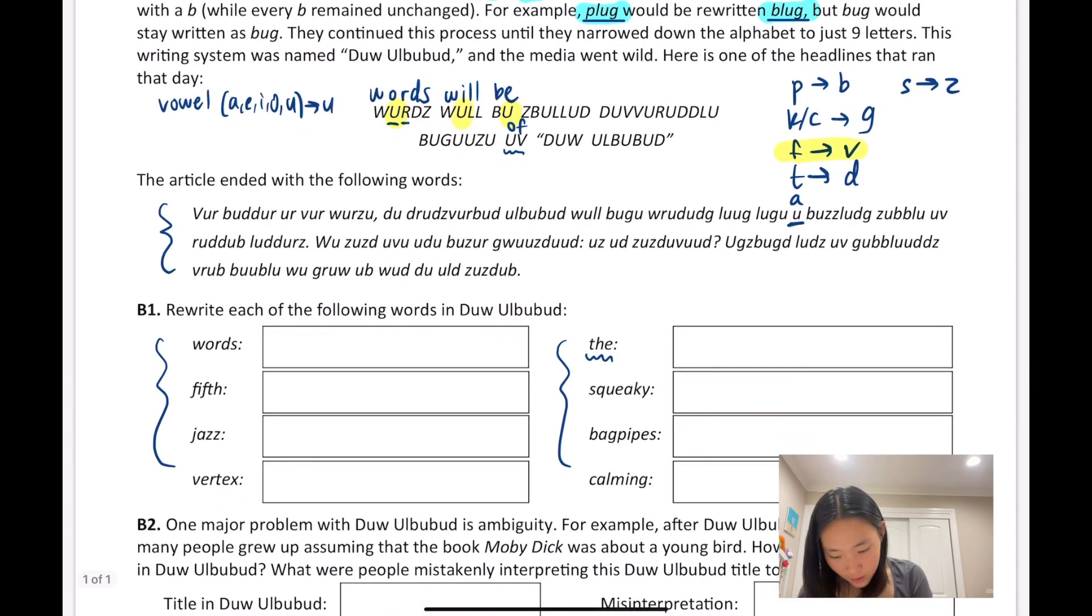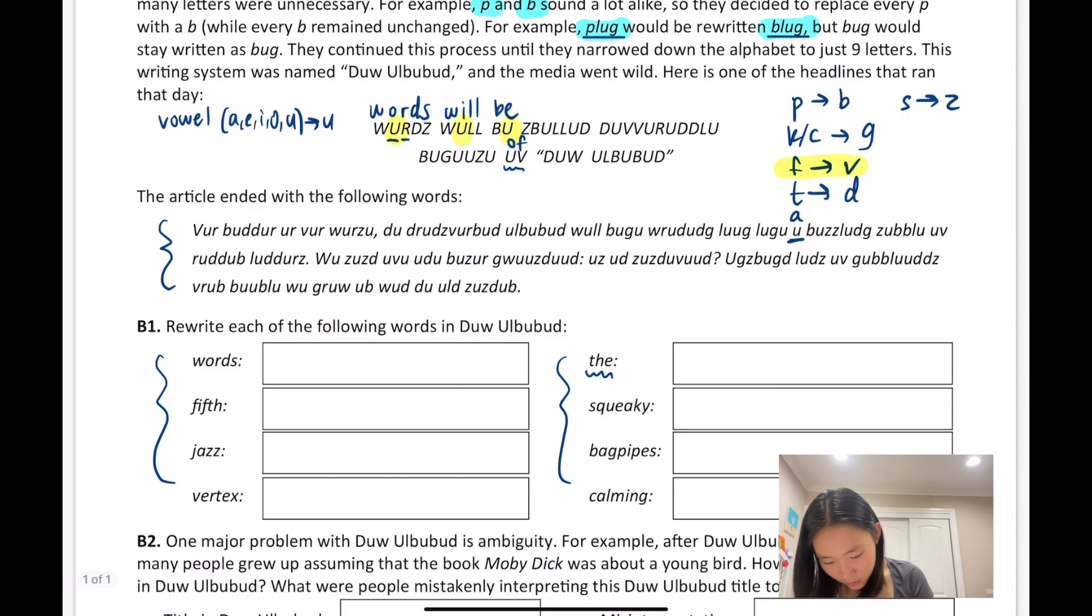I see this 'uv.' Notice my previous observation - there's f and there's v. 'uv' doesn't make sense, but if I turn this v into an f and this u into an o, then 'of' would make sense. 'Butter' - butter doesn't really make sense, but 'better' might make sense. The t's - if the t's turn into d's, and we know that the u can pretty much be any vowel, so if this was 'better.'